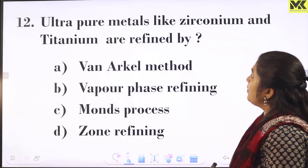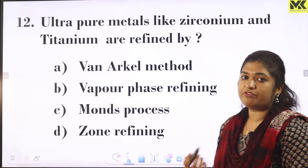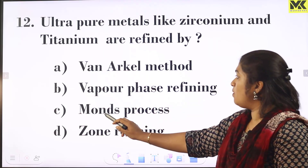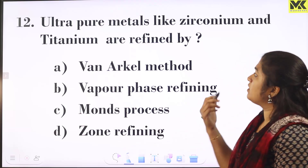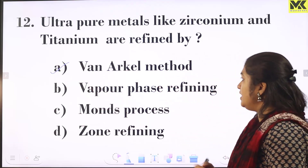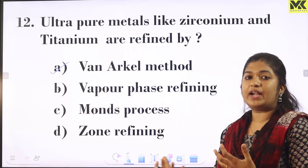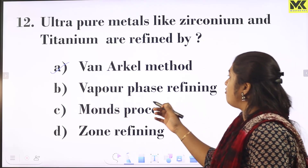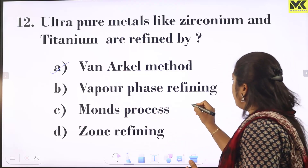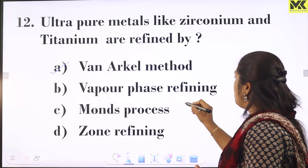Ultrapure metals like zirconium and titanium are refined by the Van Arkel method, which is a type of vapor phase refining. The Mond process is used for the extraction and purification of nickel.